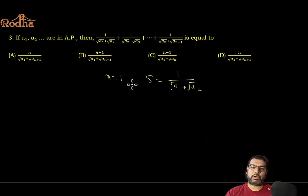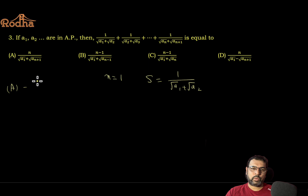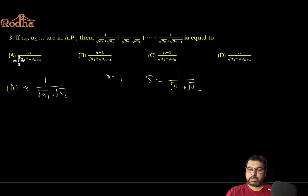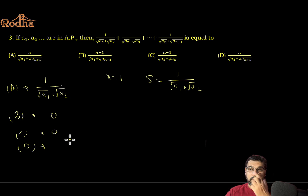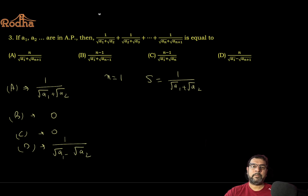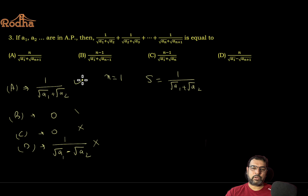Checking the options with n = 1: Option A gives 1/(√a1 + √a2) — matches exactly, could be the answer. Option B gives 0 when n = 1 — eliminated. Option D gives 1/(√a1 − √a2) — wrong sign, eliminated. With the other options also ruled out, only Option A remains. These are actual CAT questions from the last four to five years, confirming the trick works on modern papers too.